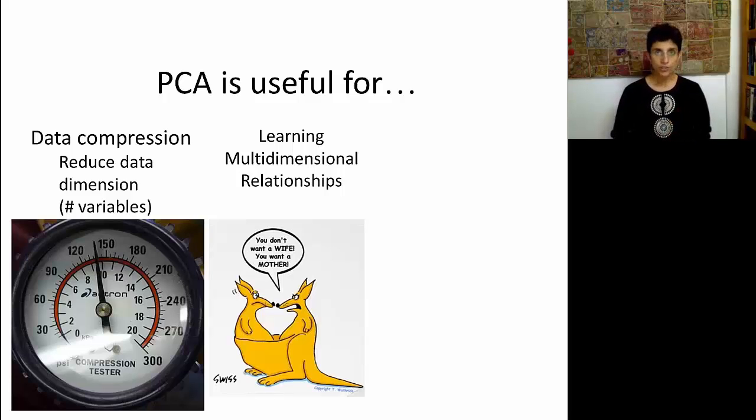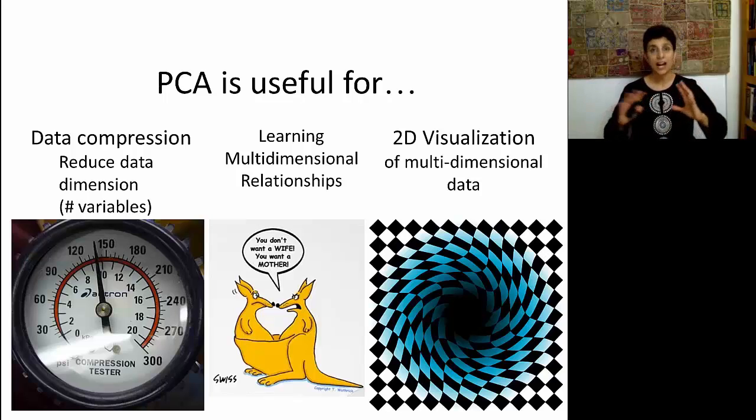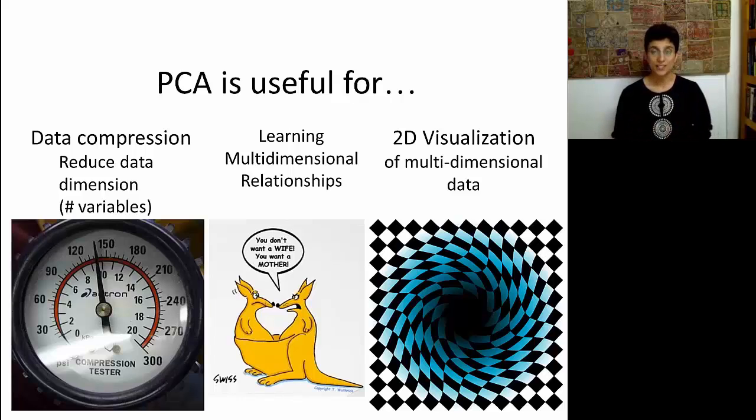A third very nice use of PCA is being able to visualize multi-dimensional data, meaning lots and lots of measurements, in a 2D or maybe 3D space. So the idea of projecting the data that's in high dimension, because we have multiple measurements, into a certain space. That was also the photo on our cover slide. If you go back and see, we're looking at a shadow of a 3D tree onto a 2D pavement.